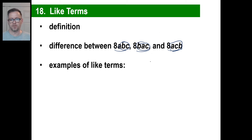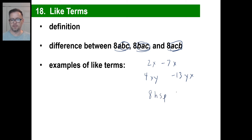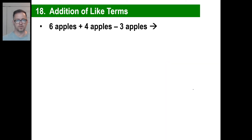Examples of like terms: 2x and negative 7x — those are like terms. 4xy and negative 13yx — those are like terms. It doesn't matter what order you put those in as long as you have the same variables. You could have 8hsp and 21phs — same thing, those are like terms. All those variables are the same. You can just clump them together.